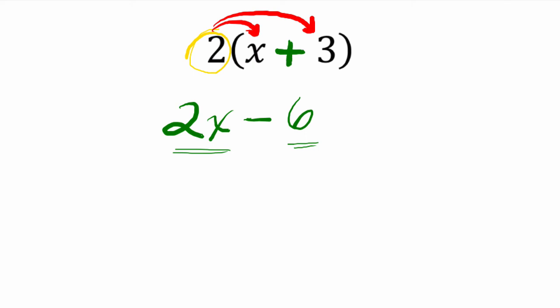If you want to think about it over addition, you can write this as plus negative 3, and that would still be correct because then it would be 2x plus 2 times negative 3, which is negative 6, and that's equivalent to 2x minus 6.